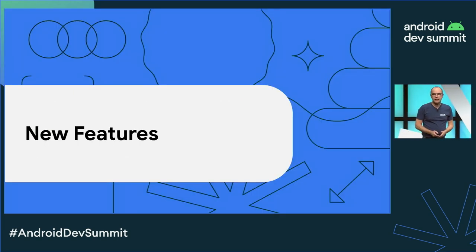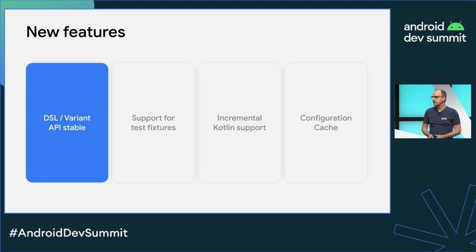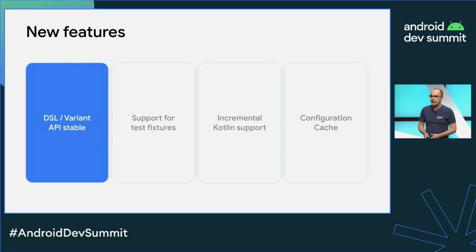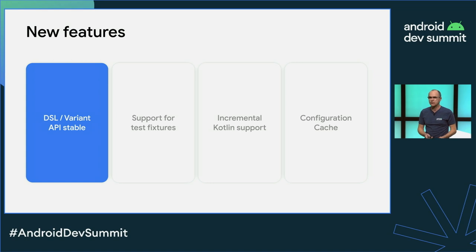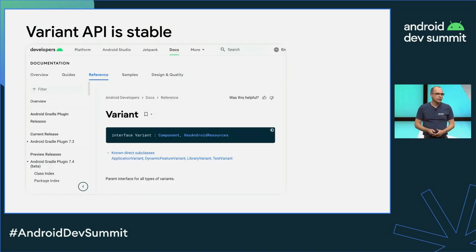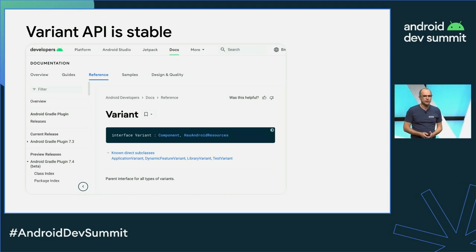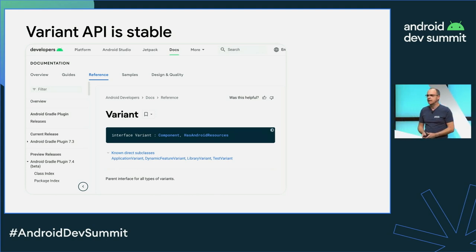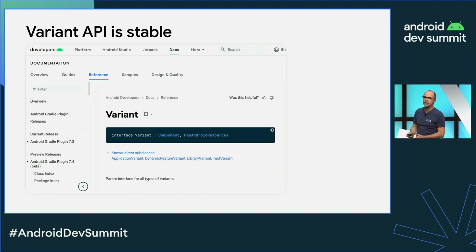The first feature I want to highlight is the DSL Variant API. I've talked about this many times in previous Android Dev Summits, so I won't get into much detail today. But I want to say that now this interface is stable, it is safe to use, and we are not going to change it unless we go through a normal deprecation period. It's a huge improvement in terms of usability compared to what we had before — it's ready to be used.